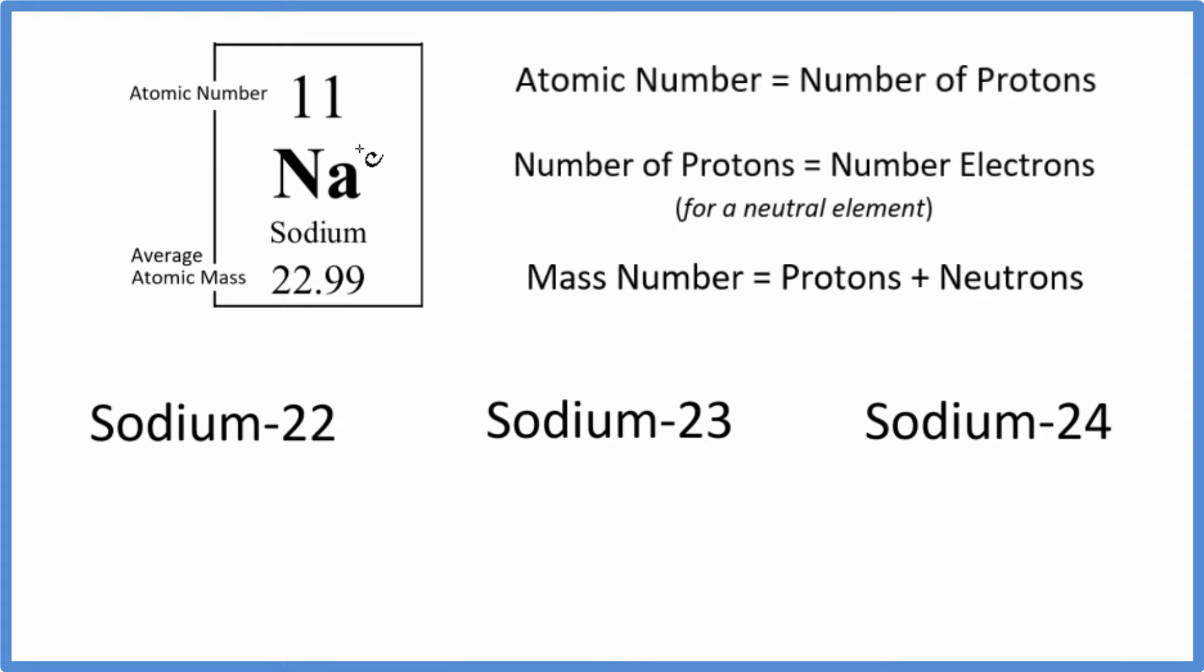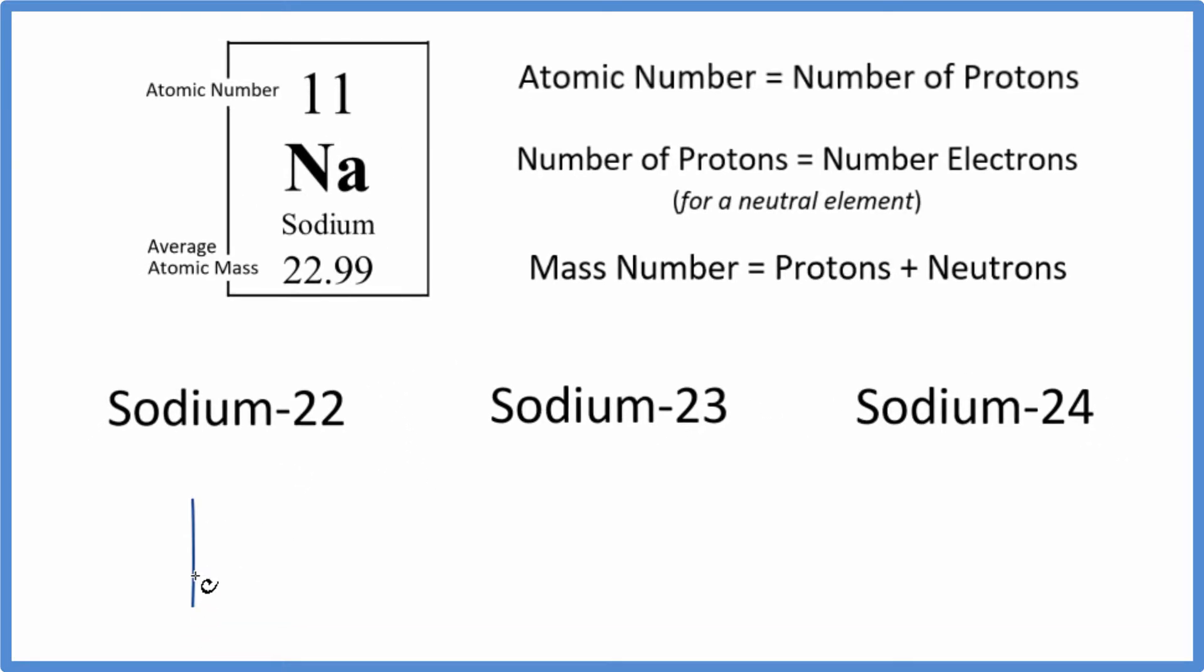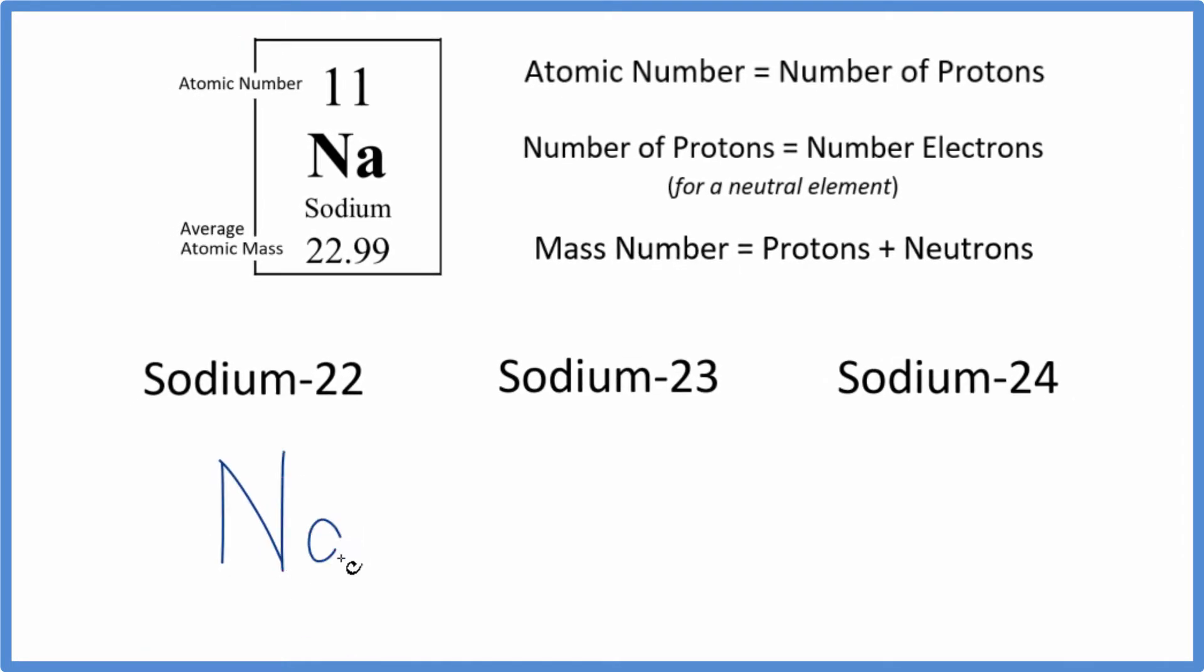For nuclear notation, first we'll write the element symbol, that's the Na. We have the mass number up here, the atomic number goes down here, and often we'll have the ionic charge over here.